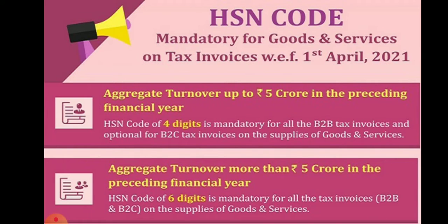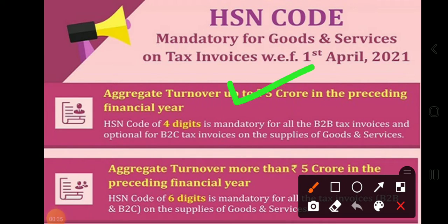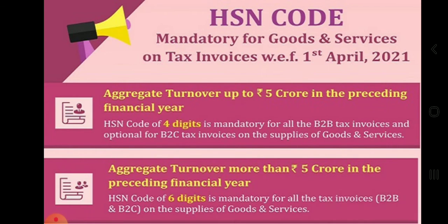The HSN Code is applicable based on aggregate turnover. For aggregate turnover up to Rs. 5 crore in the preceding financial year, a four-digit HSN Code is mandatory for all B2B tax invoices and optional for B2C tax invoices on the supply of goods and services. For aggregate turnover more than Rs. 5 crore in the preceding financial year, a six-digit HSN Code is mandatory for all tax invoices — both B2B and B2C — on the supply of goods and services.